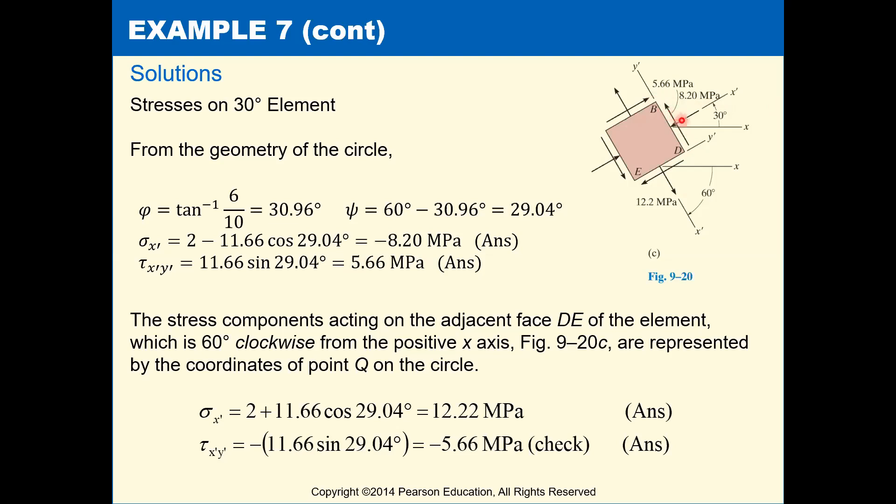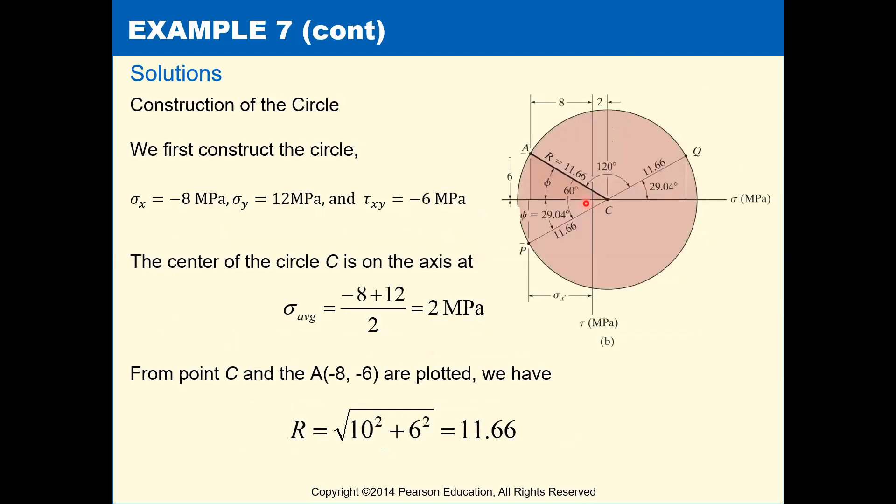Now to find the stress components that are going to be on our other face, our adjacent faces. So for this one we've rotated counterclockwise 30 to go 90 degrees away from that. So to go from this face to this face, we can just rotate 60 degrees in the opposite direction. That'll be a total of 90 degrees. That's going to be point Q on our circle. So 180 degrees away on our Mohr circle from our adjacent face or 120 degrees away from our original element.